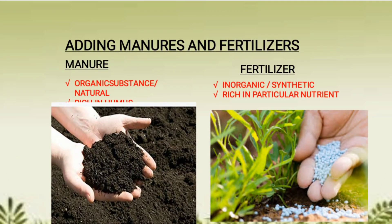Hello students, in this video we will be studying about the third agricultural practice, that is adding manure and fertilizers to the crop field. Here in these pictures you are seeing manure, which is an organic substance and which is natural. On the other hand, you are seeing fertilizer, which is inorganic, artificial, and synthetic.